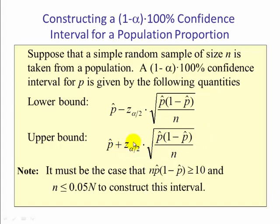Now what is this z alpha over 2? Well, this is what we call the critical value of z and it is determined by the confidence level. Now we must note there's two restrictions here: n times p-hat times one minus p-hat has to be greater than or equal to 10 for it to be normal, and the sample size must be less than or equal to 5% of the population.